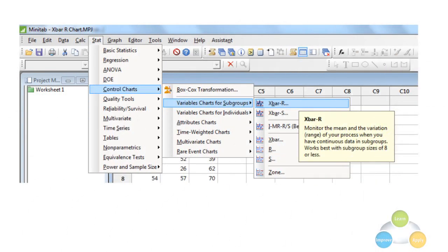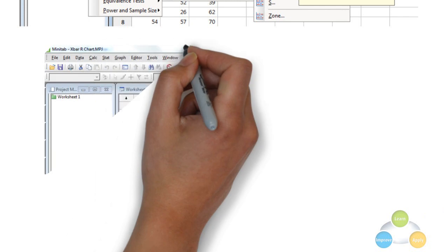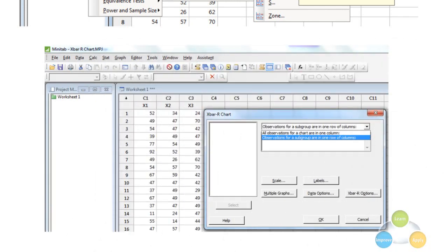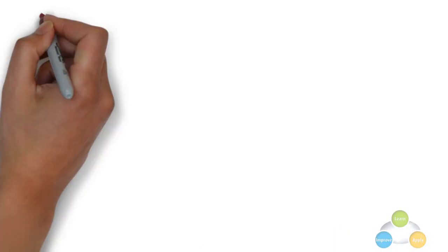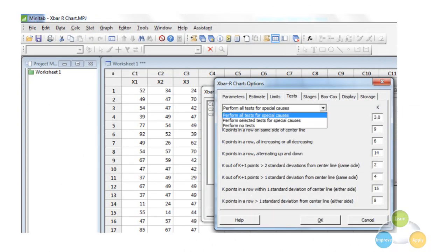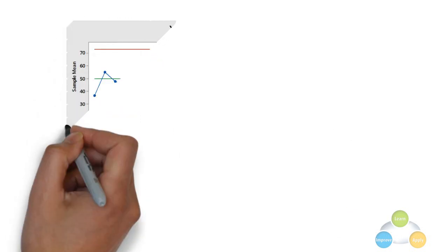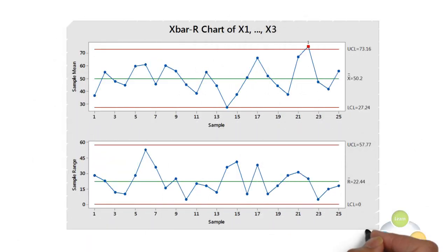To create the X bar R chart, go to the Minitab menu and select Stat, Control Chart, Variable Chart for Subgroups, and then X bar R. Select an option of observations for subgroup or in one row of columns. Select X1 to X3 and click on the X bar R options. Once the X bar R chart window opens, select Perform all tests for special causes and click OK. You will get the final result of X bar R chart as below.